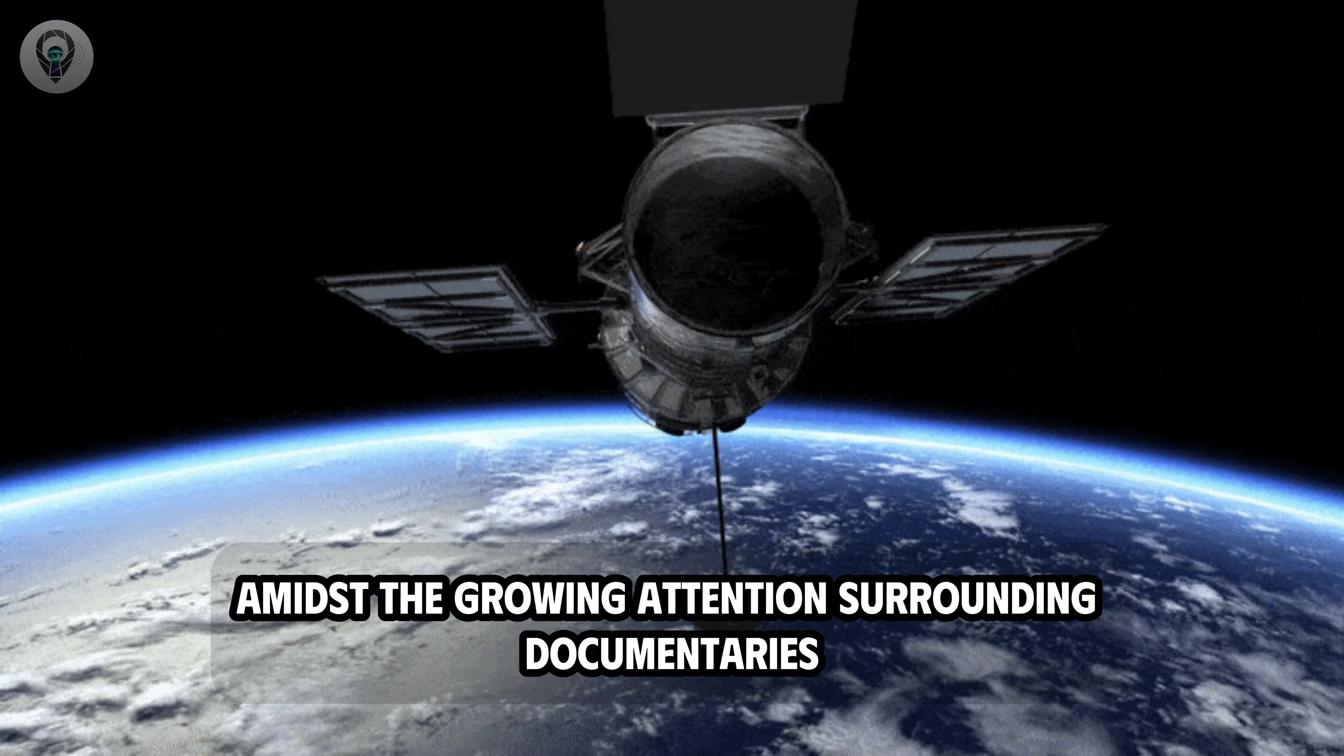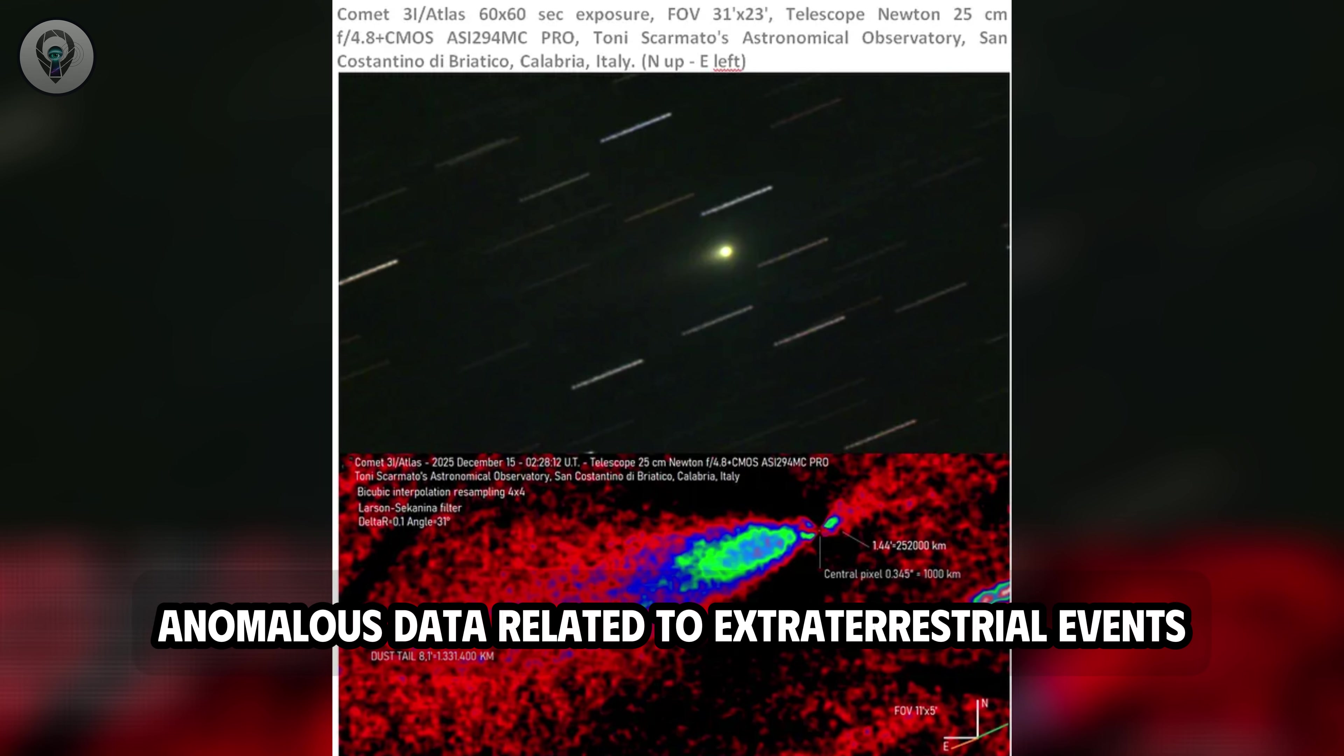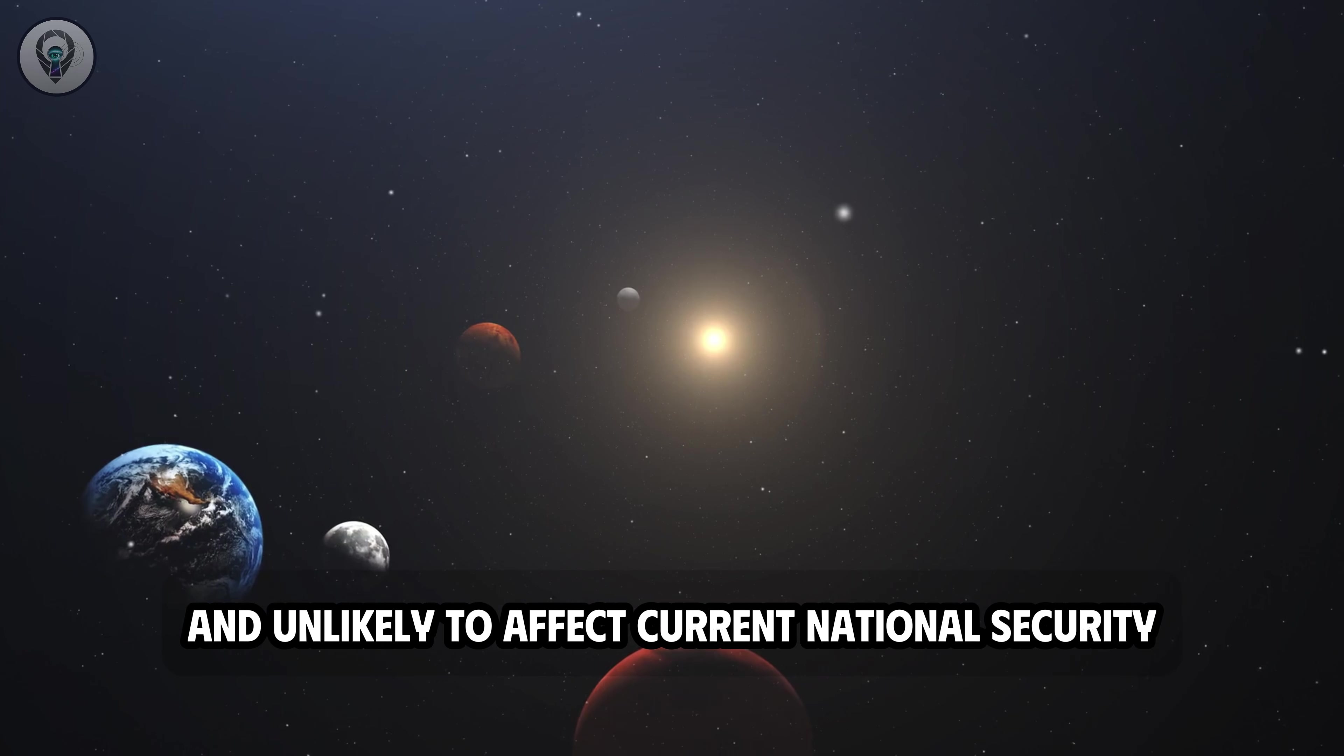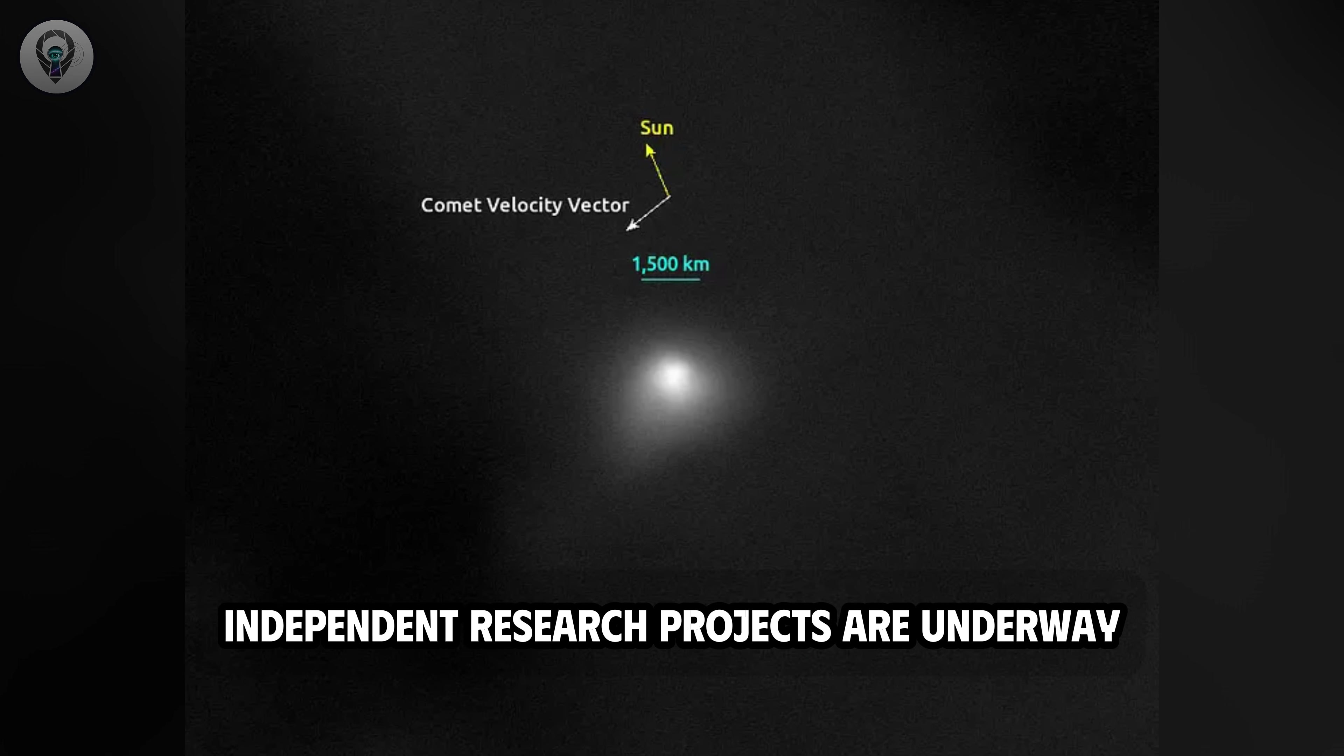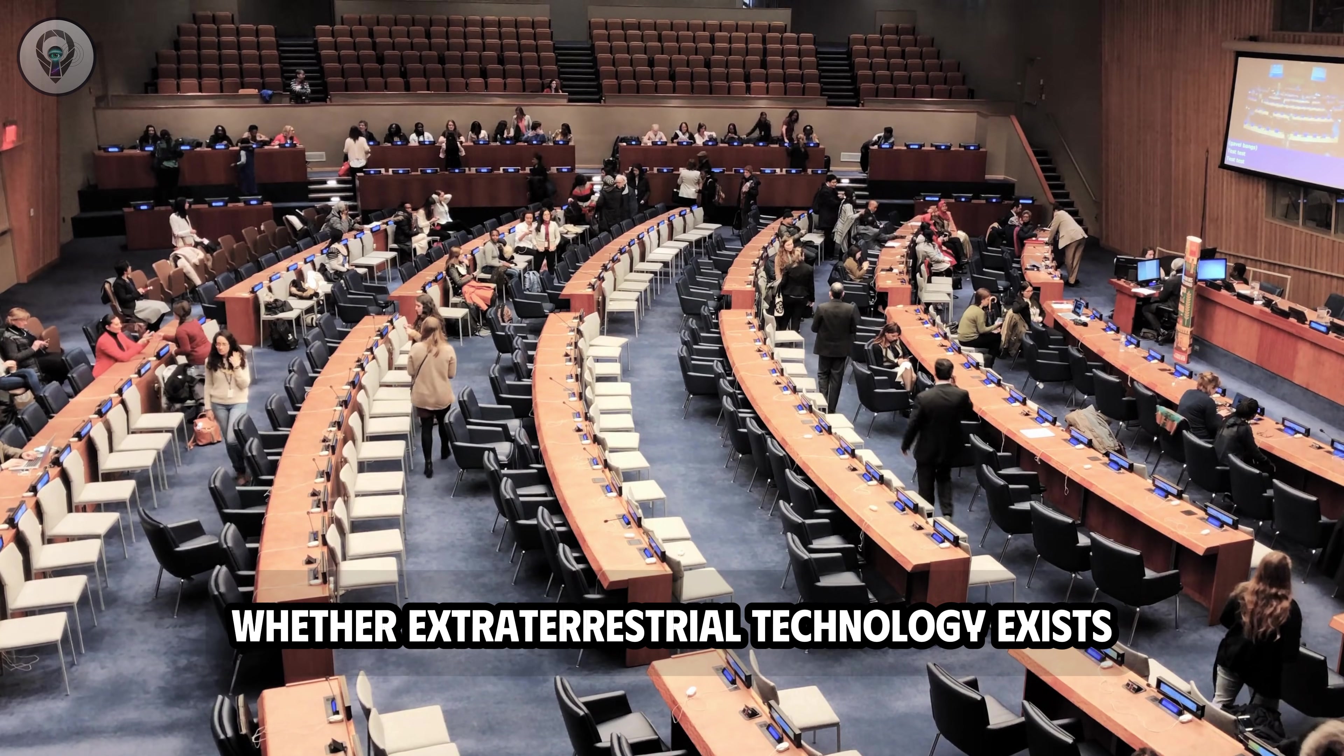Amidst the growing attention surrounding documentaries and declassified materials about unidentified phenomena, the issue of information transparency continues to be raised. Many questions revolve around the possibility that governments are holding previously unreleased anomalous data related to extraterrestrial events. From a scientific perspective, researchers argue that if data collected decades ago exists, its publication to the scientific community is necessary and unlikely to affect current national security. However, there is currently no evidence to confirm the existence of such data. Alongside this debate, independent research projects are underway to seek answers using scientific methods. Several observatories in the US are monitoring millions of celestial objects annually, using machine learning algorithms to detect anomalies. The goal is to verify whether extraterrestrial technology exists, rather than relying on speculation.